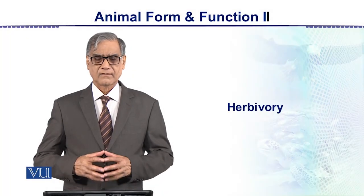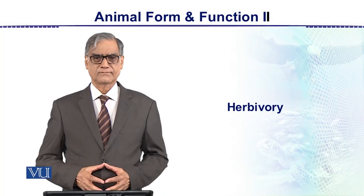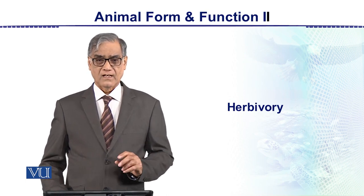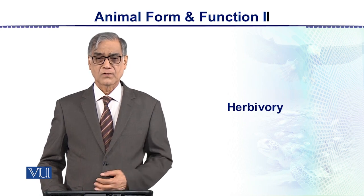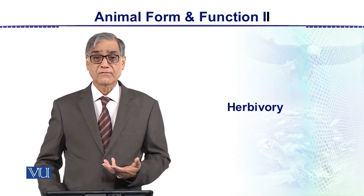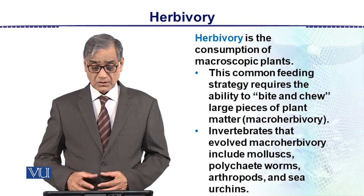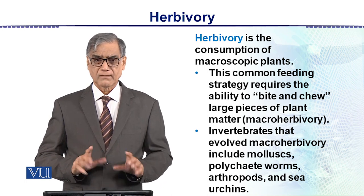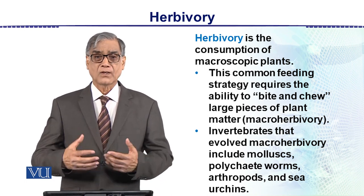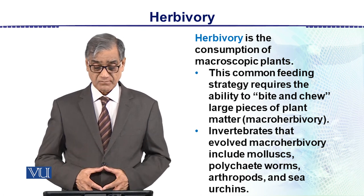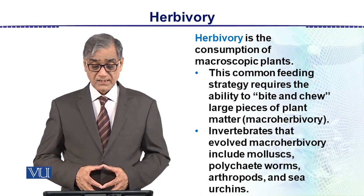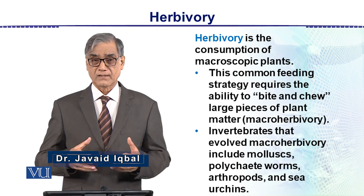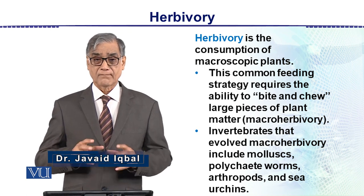In this module we talk about herbivory — that is the condition of herbivorous plants or animals that feed upon plants. Herbivory is the consumption of macroscopic plants — not microscopic, but macroscopic. This common feeding strategy requires the ability to bite and chew.